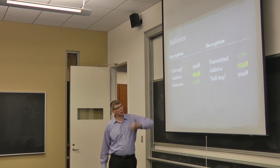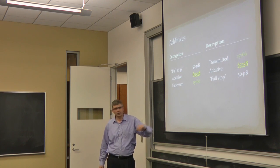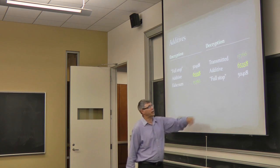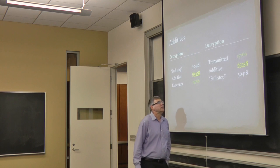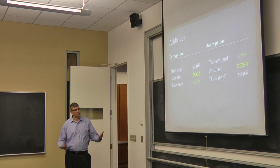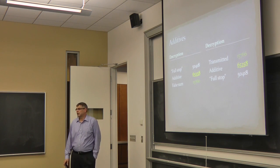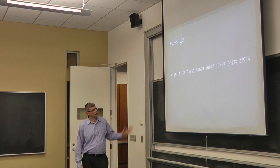When that was obtained by the receiving operator, he would subtract the additive. Now, again, it's a false subtraction. So, here it's 8 from 6 is mod 10. Get back 50418, which is the underlying code group. Look it up in the code book and recover the message.